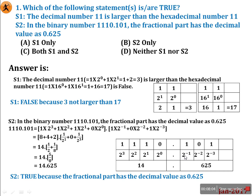For the fractional part in shortcut method: 2^-1 means 1/2, the middle digit is 0 so eliminate it, 2^-3 gives 1/8. So 1/2 + 1/8 = 0.625. The total is 14.625, confirming S2 is true because the fractional part has decimal value 0.625. So the answer is S2 only.